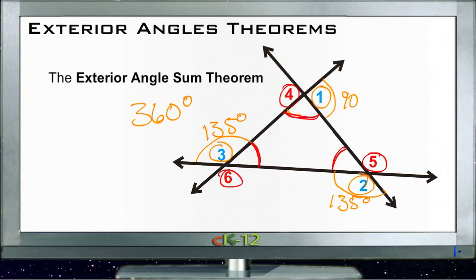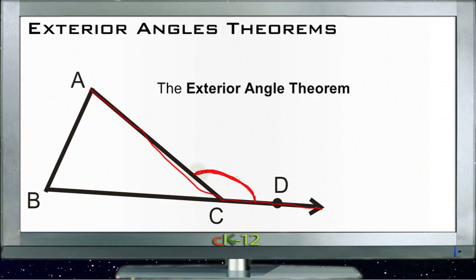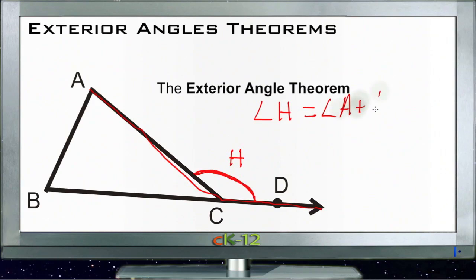The other theorem, the Exterior Angle Theorem (not the sum theorem), tells us that any exterior angle is always equal to the other two interior angles added together. So this exterior angle from A to C to D — we'll call it angle H — is equal to angle A plus angle B.